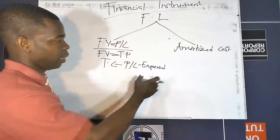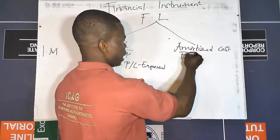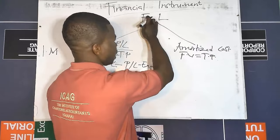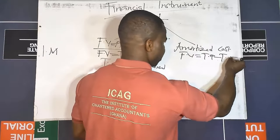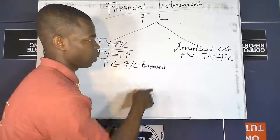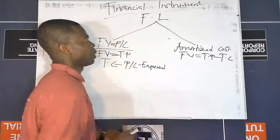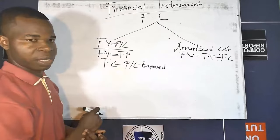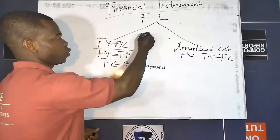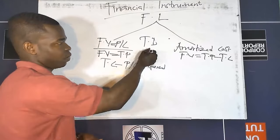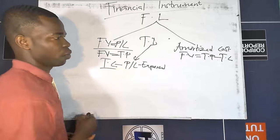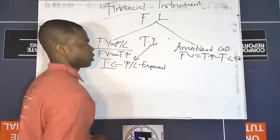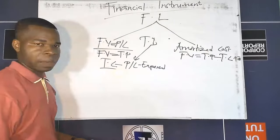For the second classification — financial liability at amortized cost — the initial measurement is still fair value, which is the transaction price, but in this case we deduct transaction costs, giving us: fair value less transaction costs. When dealing with deep-discount loans, if there is a trade discount and the instrument is under amortized cost classification, you also add the trade discount. That is the initial measurement for the two classifications of financial liabilities.